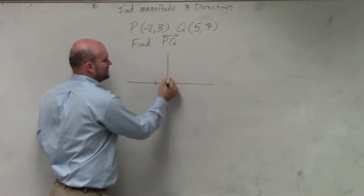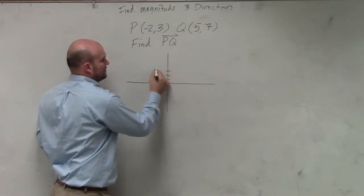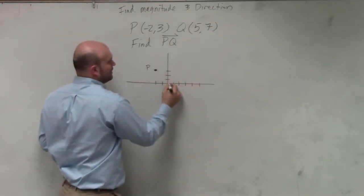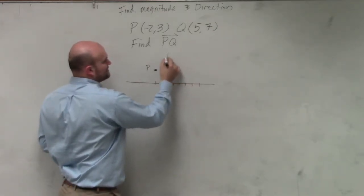So this is negative 2, 1, 2, 3, point P. And then Q is 1, 2, 3, 4, 5, and 1, 2, 3, 4, 5, 6, 7.